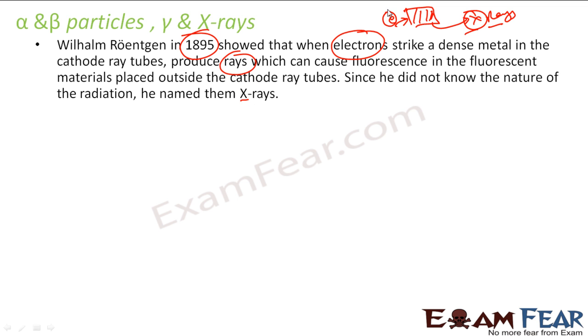He made an electron strike a dense metal and found that some rays are produced. These rays caused fluorescence in the fluorescent material placed outside the cathode ray tube. The electron is hitting the metal inside a tube, rays come out, and there is fluorescent material that shows an impact. He was amazed that the rays crossed the glass.